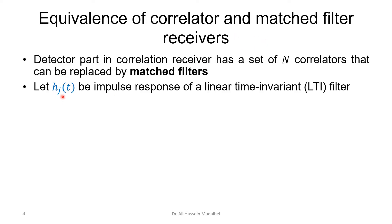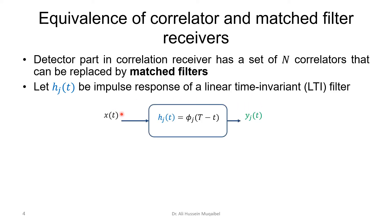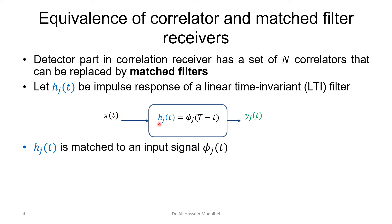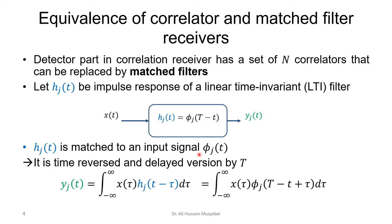A matched filter has an impulse response h(t) and is assumed to be a linear time-invariant filter — linear meaning superposition applies, time-invariant meaning it does not change over time. If x(t) goes into this matched filter, the output would be y(t), which is the correlation between the input and the impulse response. We call it 'matched' because it has the same shape as the basis functions. The impulse response h(t) is a time-reversed and delayed version of the basis function, with a minus sign for t and a delay by capital T.